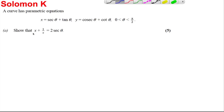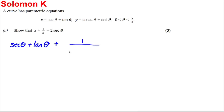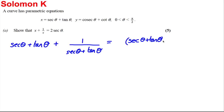Part A: X plus 1 over X means sec θ plus tan θ plus 1 over (sec θ plus tan θ). What we can do is combine these with a common denominator, multiplying the first term by sec θ plus tan θ, so everything is over the common denominator sec θ plus tan θ.